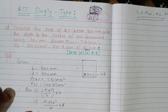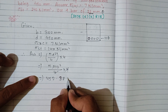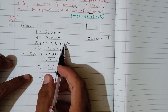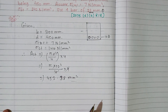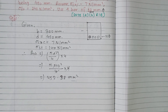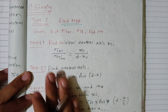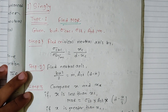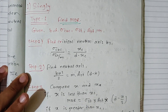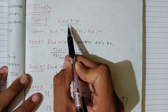Ast equals 452.38 mm squared. We are using the single reinforced, working stress method, Type 1 approach to find the moment of resistance.